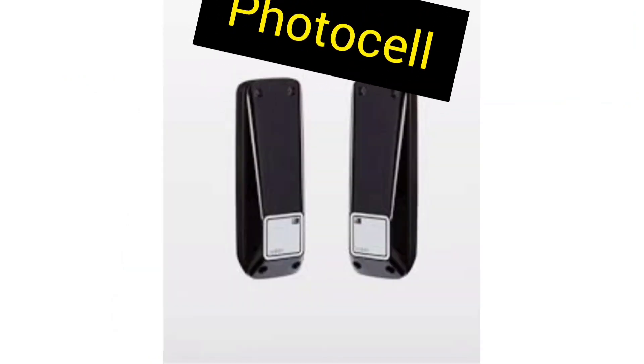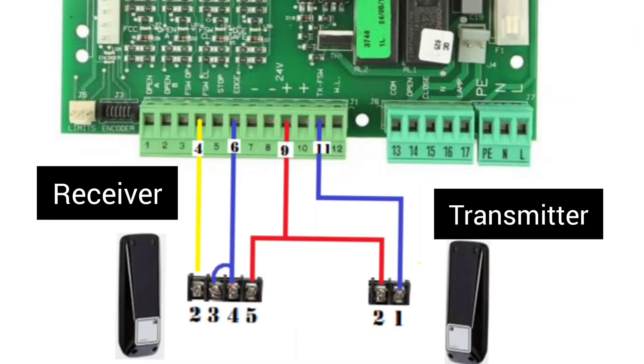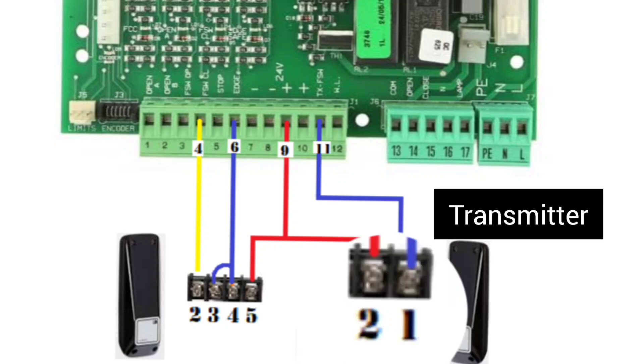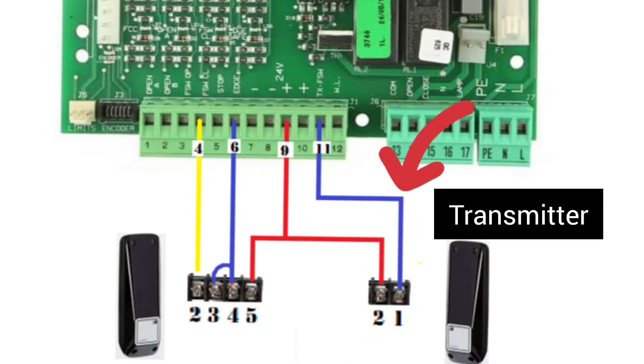Photocell. Photocell consists of transmitter and receiver. Transmitter has two terminals 1 and 2. Connect terminal 1 to terminal 11 on board. Connect terminal 2 to terminal 9 on board.